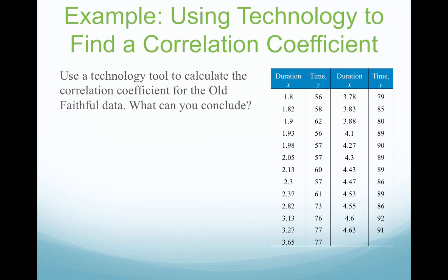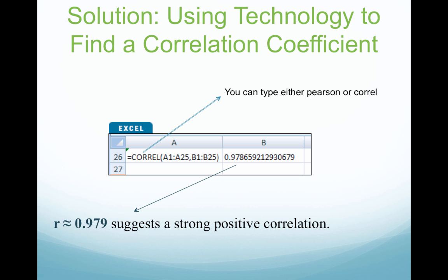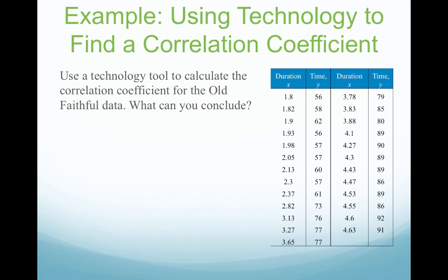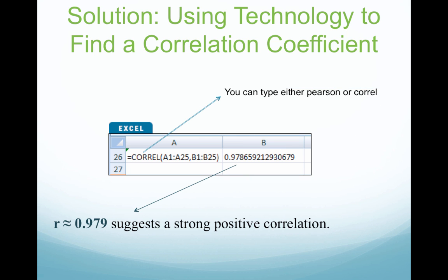Let's do the same thing with the Old Faithful data. I'm going to put duration in column A and the times in column B. You can also type equals CORREL — short for correlation, C-O-R-R-E-L — then in parentheses highlight your X values, comma your Y values. You can type either PEARSON or CORREL. If you have the data analysis pack installed in Excel, there's a straight-up correlation option. Here we get a correlation coefficient of approximately 0.979 — a strong positive correlation.